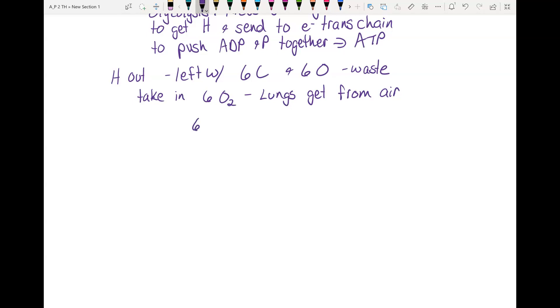Then you will have six carbons from the glucose, six oxygens from the glucose, and you will have 12 oxygens from the air. And you have your 12 hydrogens after they go through the electron transport chain.